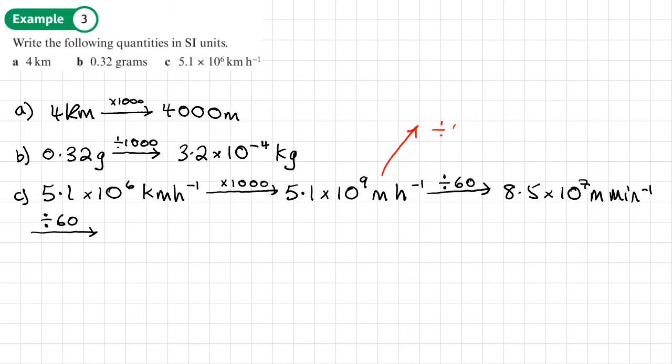So that gives us 1.41, and it's like 6 recurring, times 10 to the power of 6, and that will be meters per second. So I might want to round that to 3 significant figures. So now I get 1.42 times 10 to the 6 meters per second.